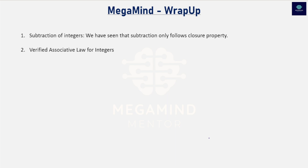Quick recap — in this video we saw that subtraction only follows the closure property; it does not follow commutative or associative law. We also verified the associative law for addition of integers. Hope this video was helpful. See you in the next video where I will cover the next exercises. Stay tuned, don't forget to subscribe, hit the like button, and comment below. Thank you so much for watching.